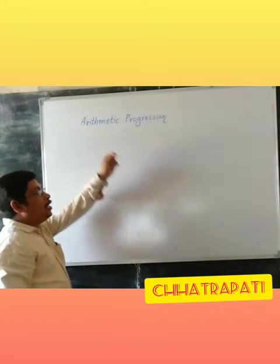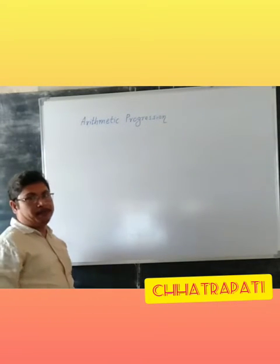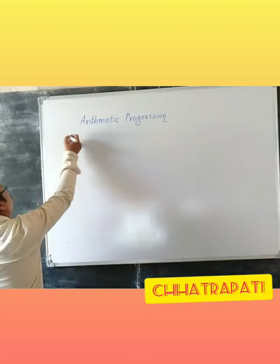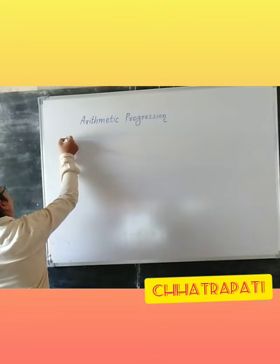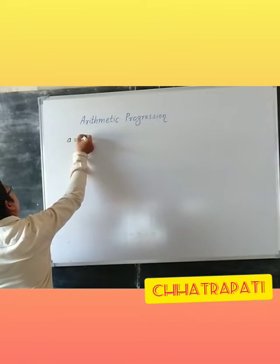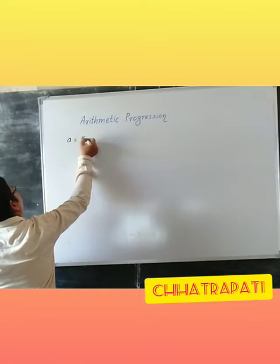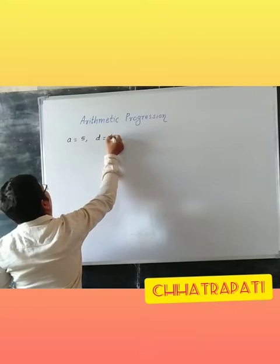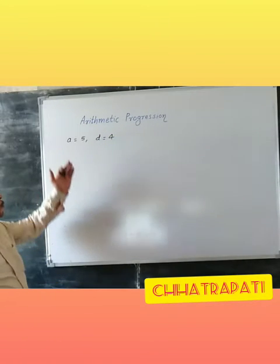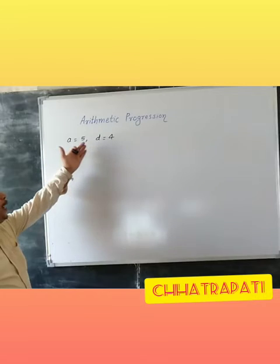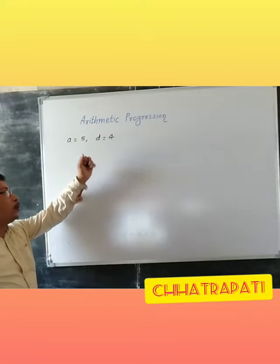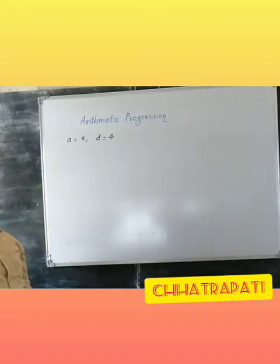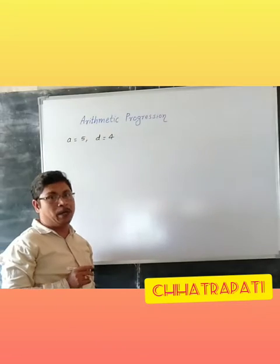As we are learning arithmetic progression, suppose we have given first term 5 and common difference 4. If we require here the first 4 terms of arithmetic progression, then how to calculate?